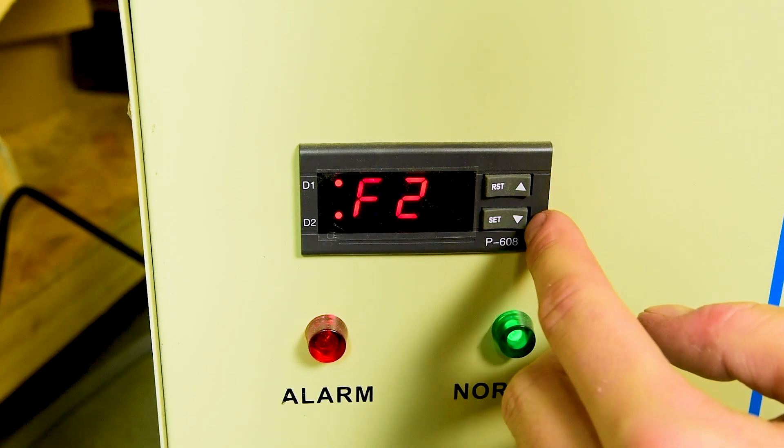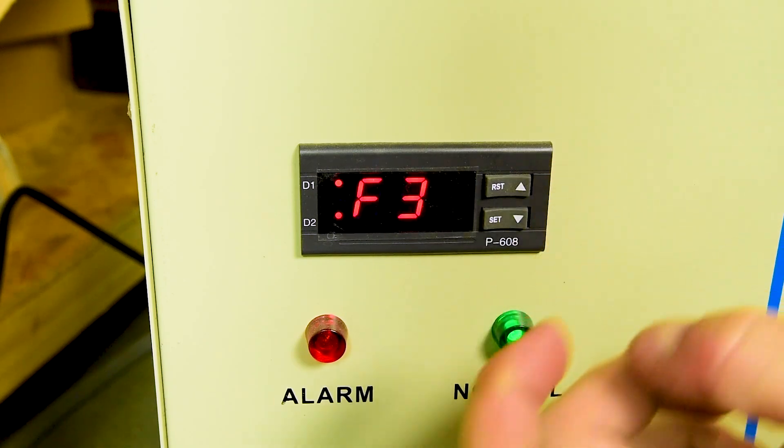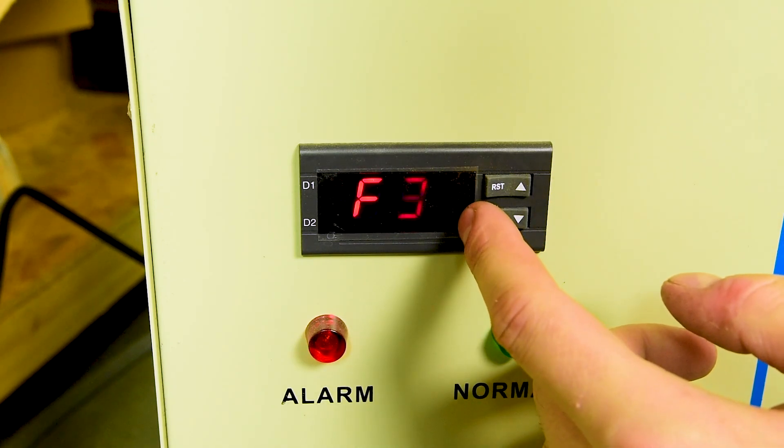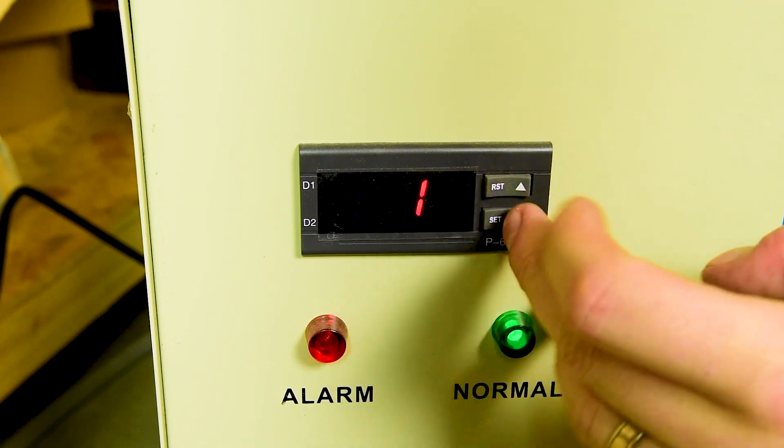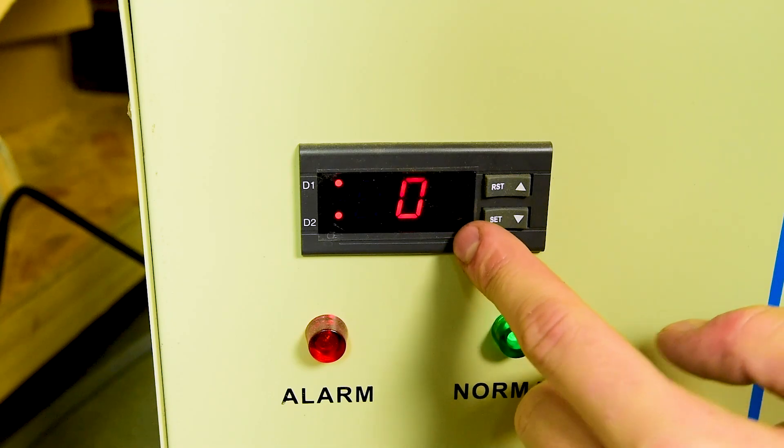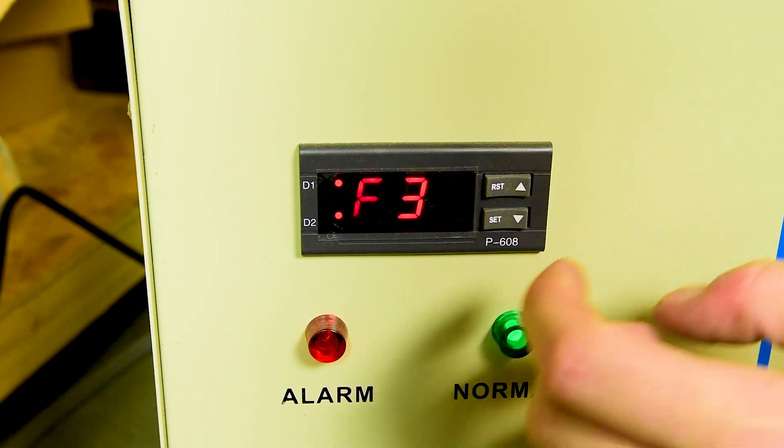F1 is only for the intelligent mode so that doesn't matter. So F3 is the one which is going to matter the most to us. This is the way of control as the Chinese call it. Setting zero means that we're going for manual mode which is what we want.